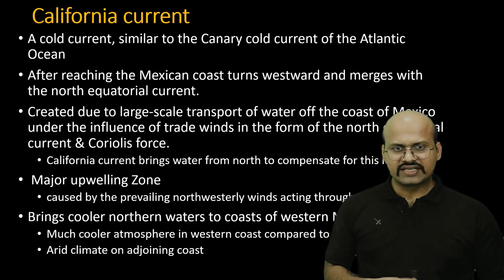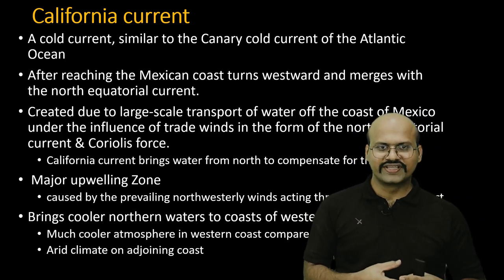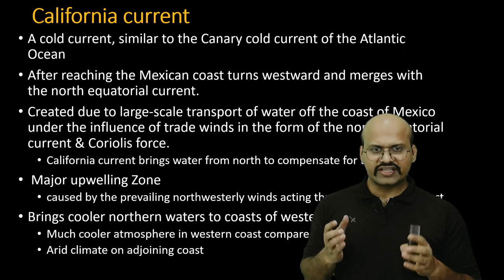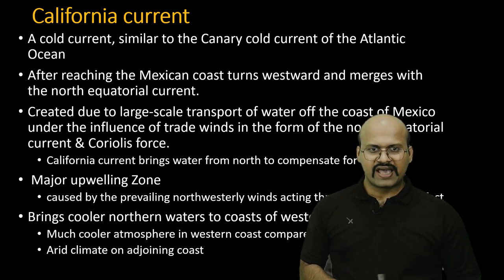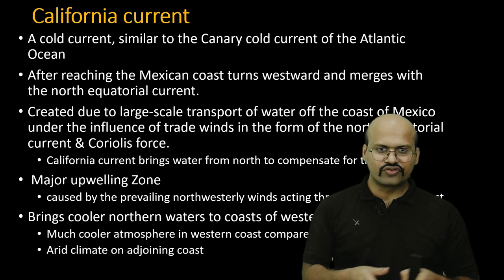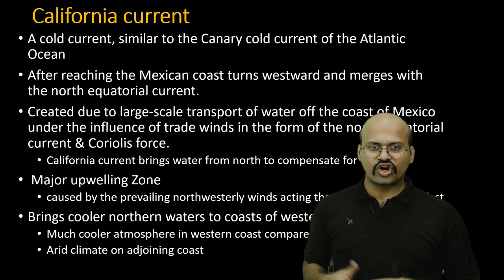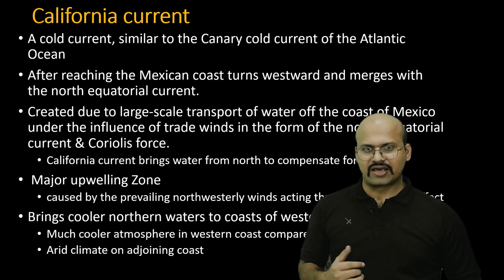When winds from the ocean move over these cold water currents, the moisture in them condenses as fog. When these winds then move toward the land, there is no remaining moisture, so they do not provide rainfall to the coastal regions, resulting in arid climate.